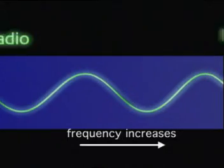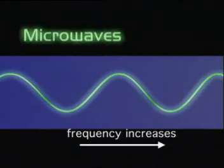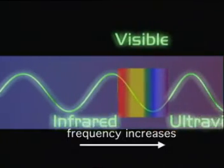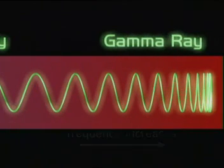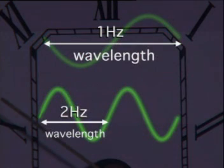Wavelength and frequency are related. As the waves get shorter the frequency increases. If the frequency is doubled, the wavelength is halved.